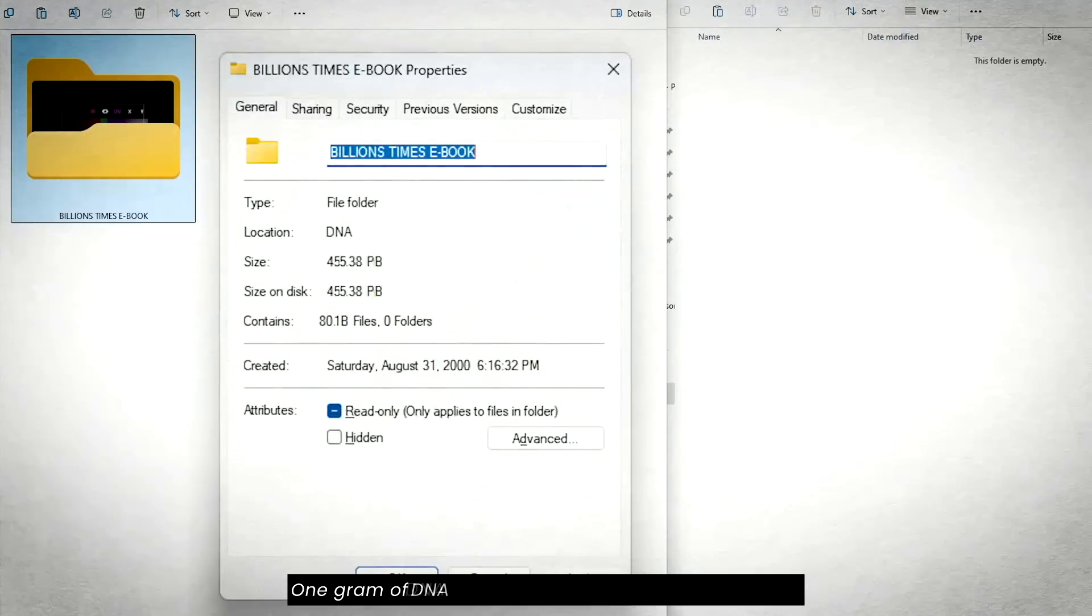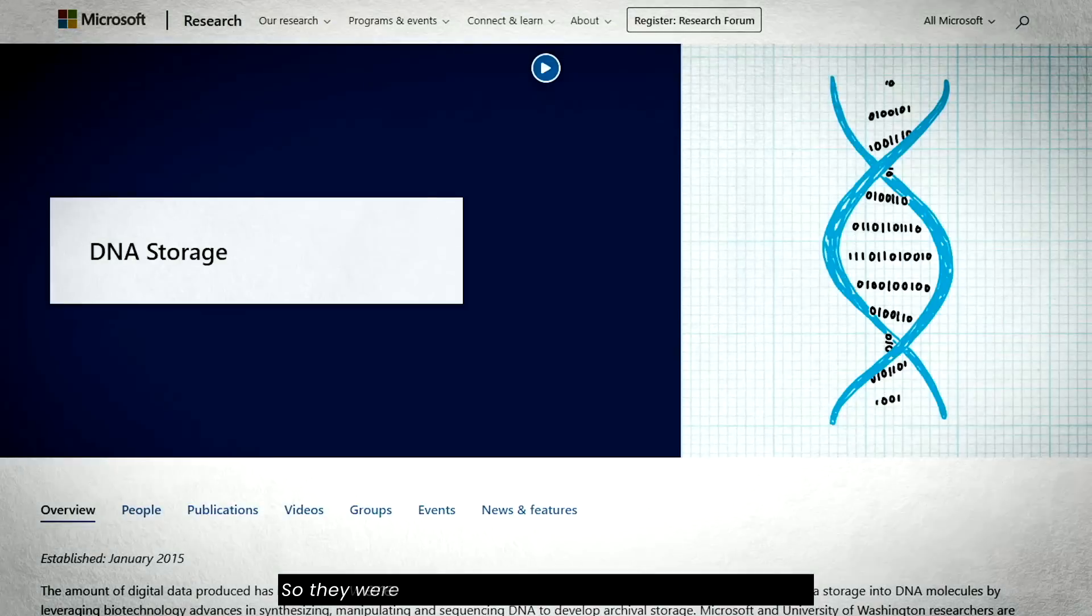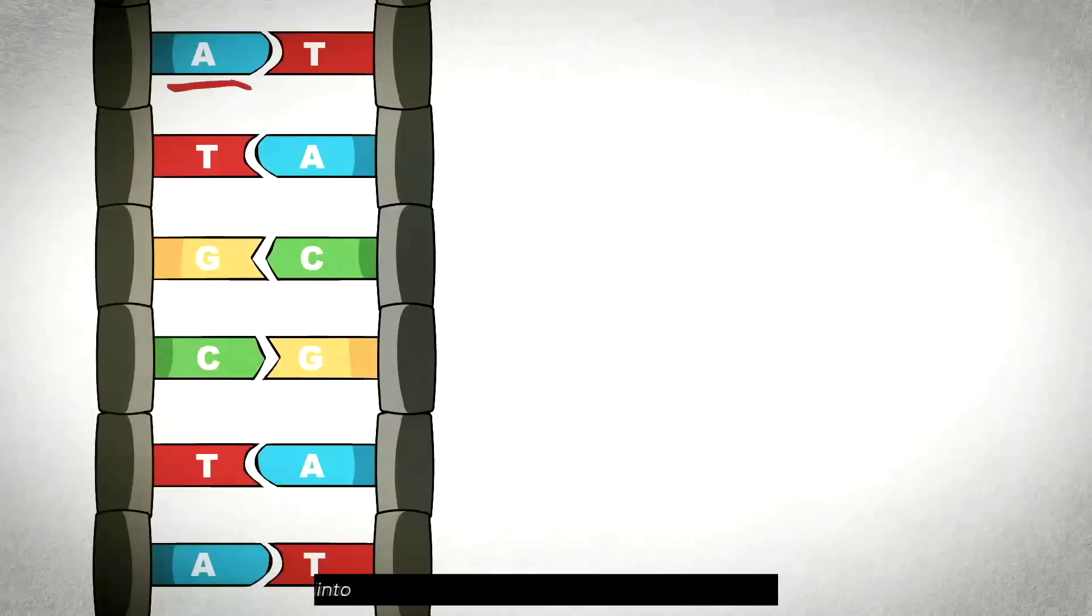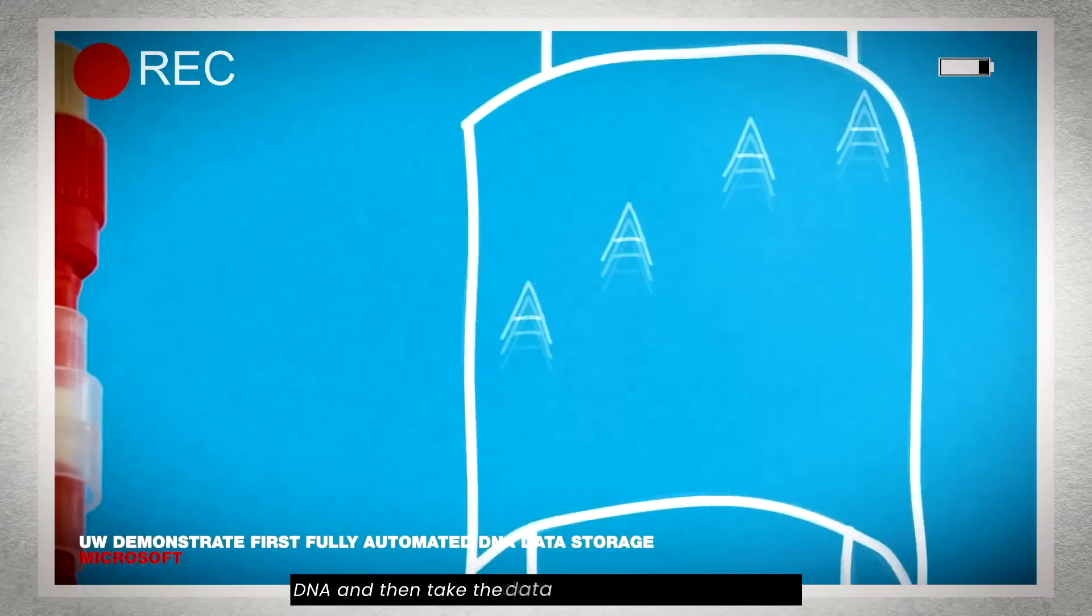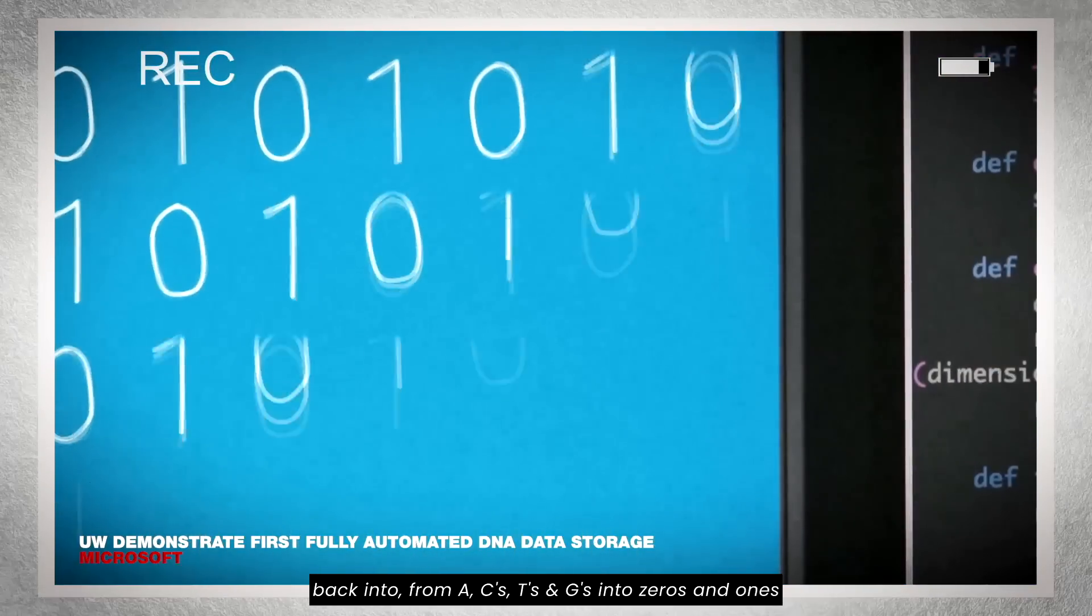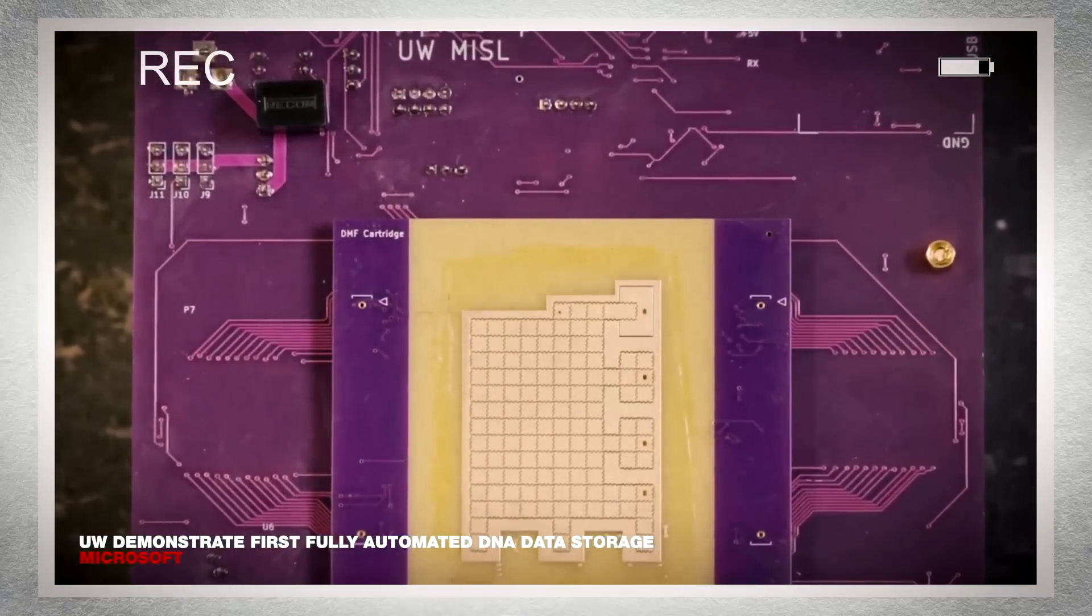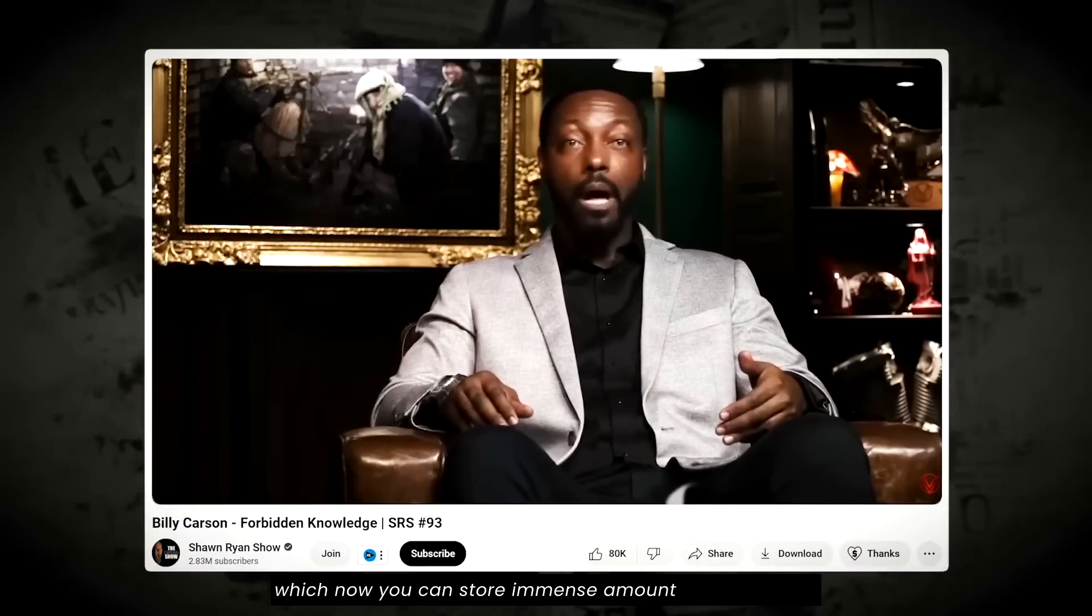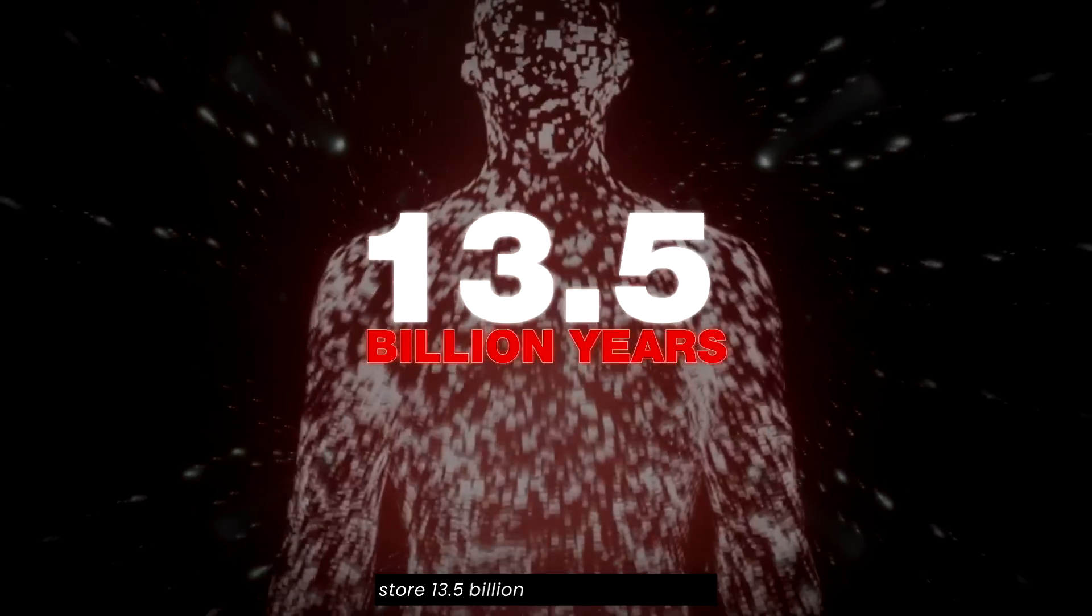One gram of DNA can hold over 433 petabytes of data. So they said, wait a minute, this is crazy. So Microsoft started experimenting with this too. They were able to take data, zeros and ones, convert it into A's, C's, T's and G's, which is what read, write is on our DNA, and then put the data in a volume on DNA, and then take the data from the DNA and move it back into zeros and ones and put it back on another computer. So now they have made a working DNA hard drive, which now you can store immense amount of information. They estimate that one human body can store 13.5 billion years of data.